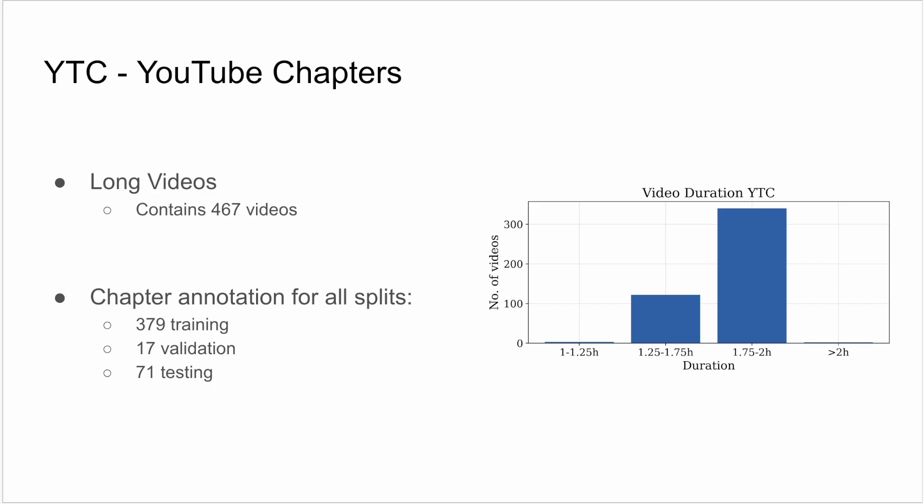The second dataset we propose, YTC or YouTube Chapters, contains YouTube chapter annotations, again for long videos. This time, we have human-generated annotations for all splits. The dataset contains around 500 videos.